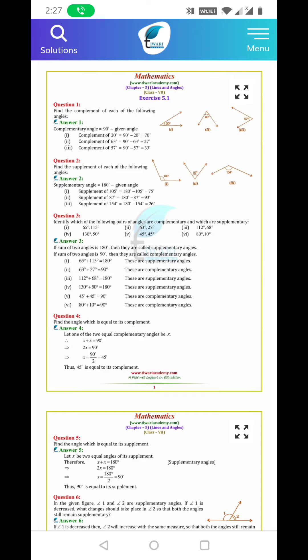Find the supplement of each of the following angles. Supplement means the sum is 180 degrees. So we calculate 180 degrees minus the given angle.